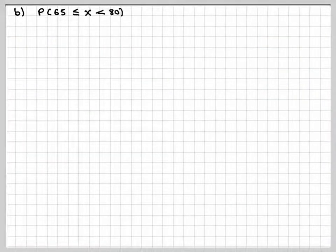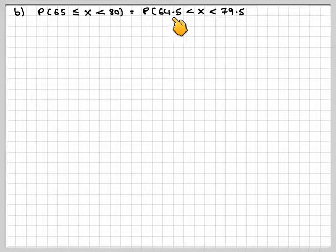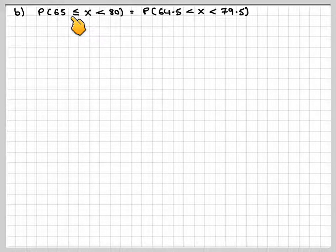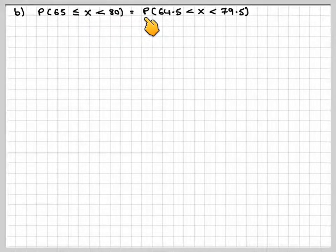The second one, the probability that X is between 65 and 80. We get the probability that X is bigger than 64.5, using the continuity correction for that. And the continuity correction for that is less than 80. We have to use 79.5.